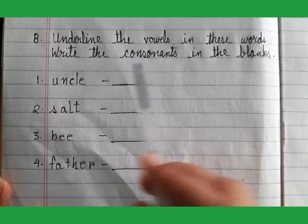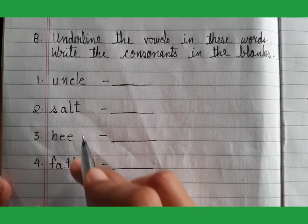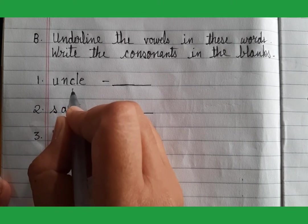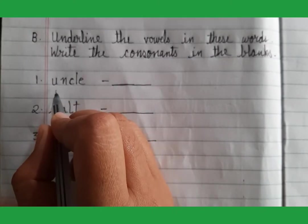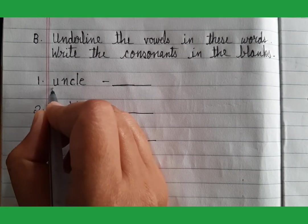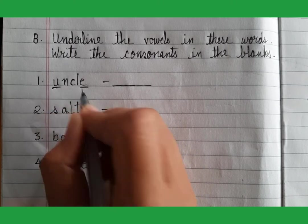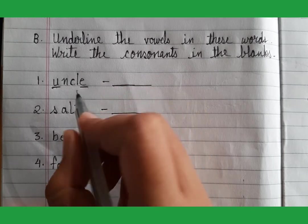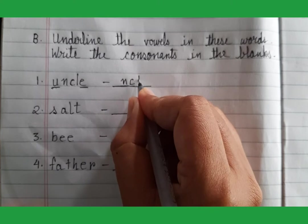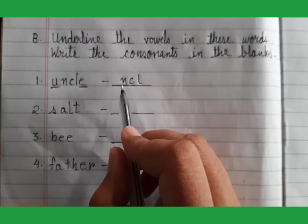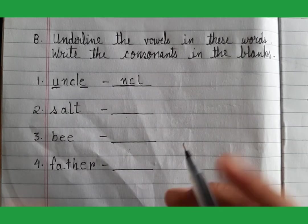In Exercise B, some words are given. We have to underline wherever vowels are and write the remaining consonants in the blank. In the first word 'uncle,' the vowel letters are U and E. U and E are both vowels, and the letters N, C, and L are consonants. So we have written N, C, and L here.